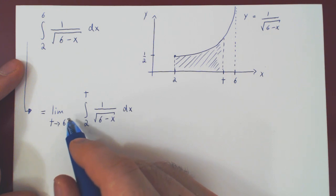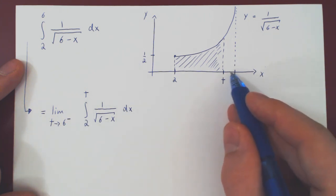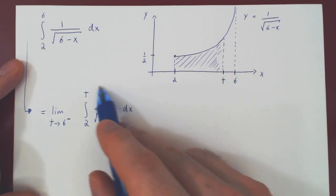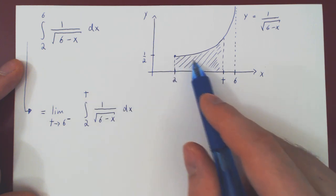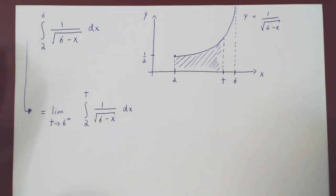So t must always be slightly smaller than 6, therefore on the left. And as t gets closer and closer to 6, this integral will be approaching this integral. And that's it.